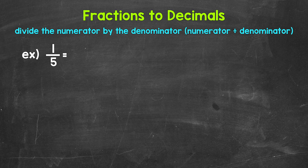When we convert a fraction to a decimal, we can divide the numerator — the top number of the fraction — by the denominator, the bottom number of the fraction. So for one-fifth, we can set this up as 1 divided by 5.